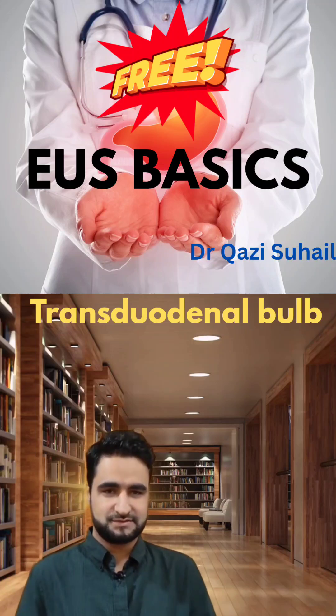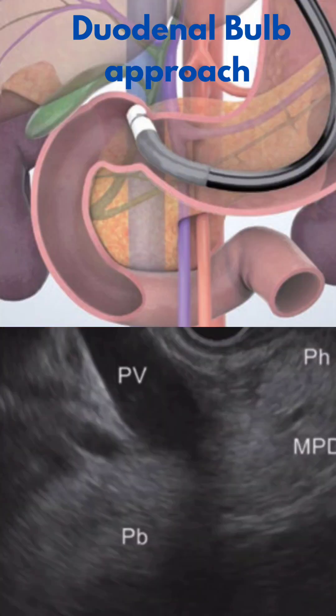Let's start this approach. After you insert the scope into the duodenal bulb to image the portal vein, you will look for the portal vein on the left side of your screen. Because once your transducer is in the duodenal bulb, the tip end of the transducer is superiorly and the shaft end is inferiorly.